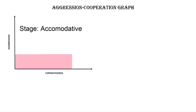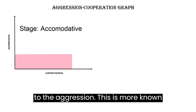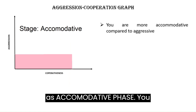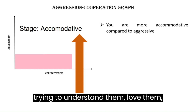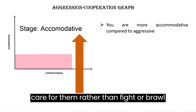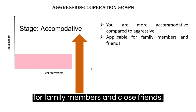Second, when cooperation is high compared to aggression, this is known as the accommodative phase. You are always trying to be with such people, trying to understand them, love them, and care for them, rather than fight, brawl, or control them. Keep this zone for family members and close friends.